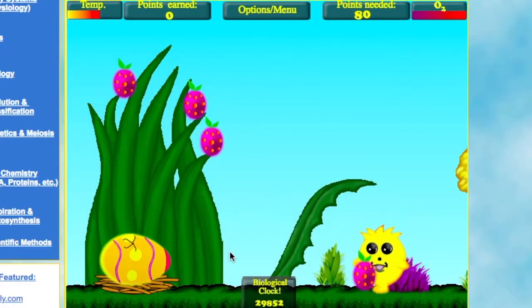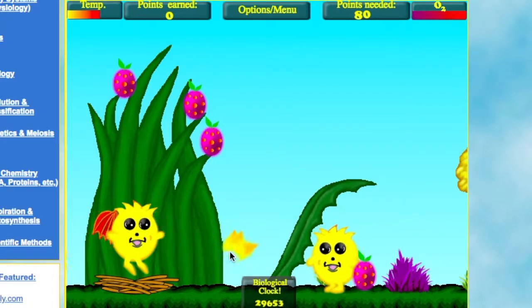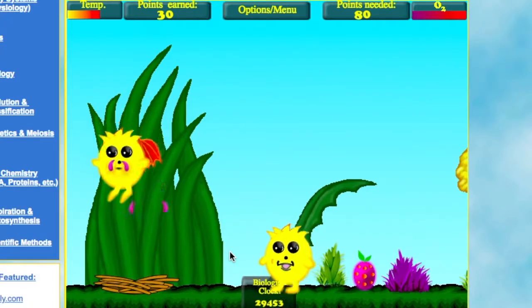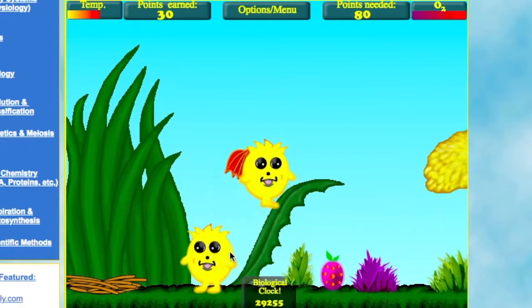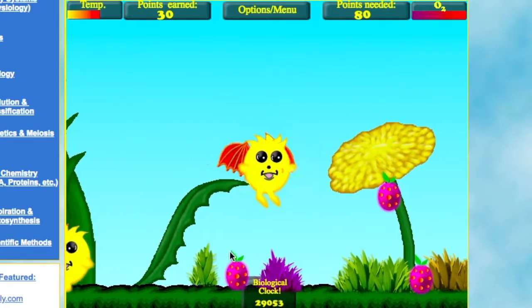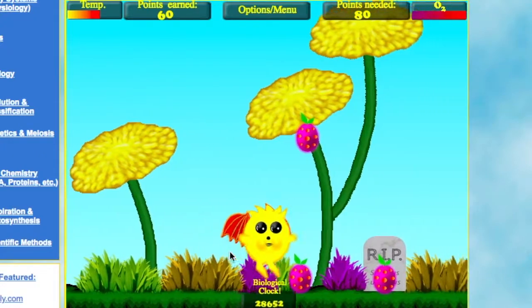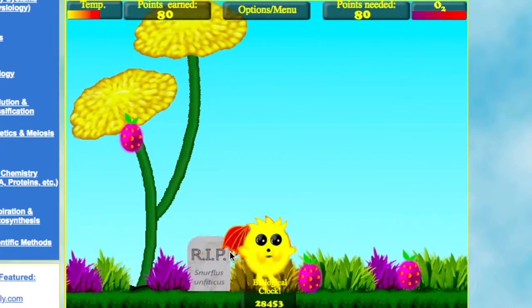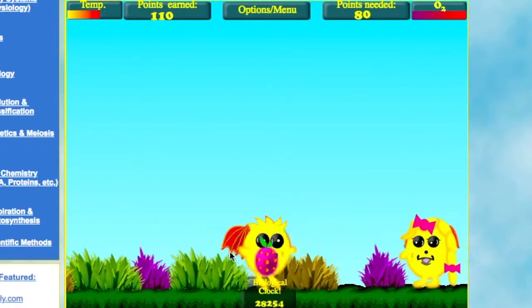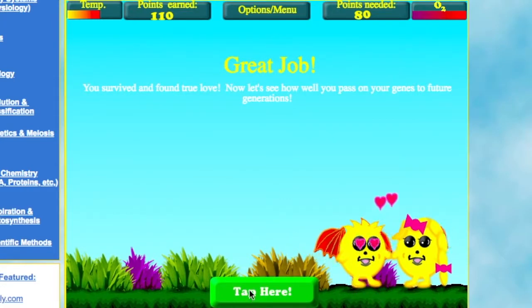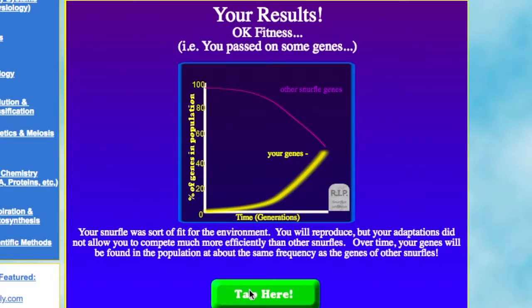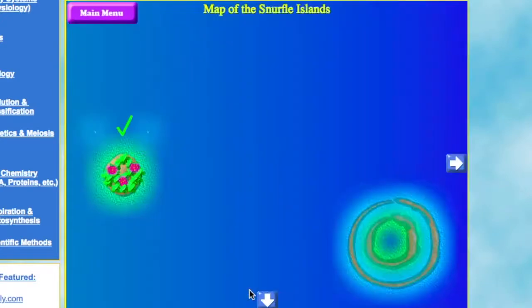All right first we're going to start off with Fruity Paradise. Oh I forgot that's actually part of the map not background. Of course this is the first island so it probably should be easy. We're just looking to not die.